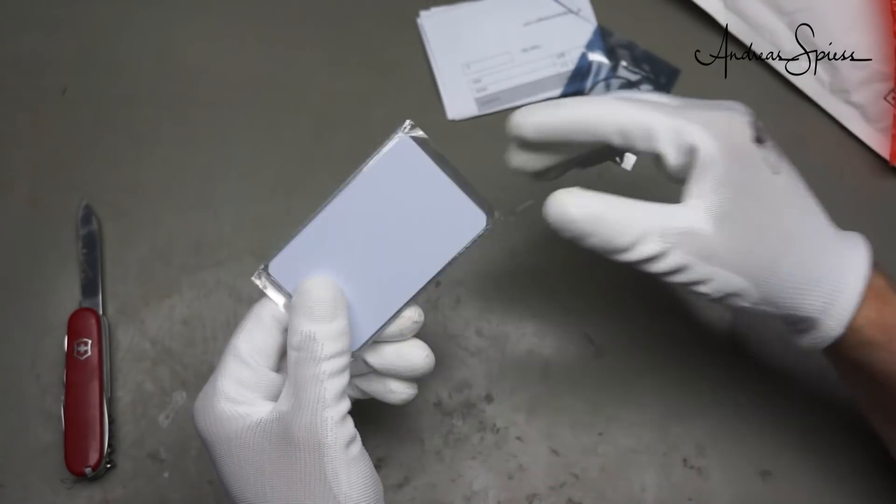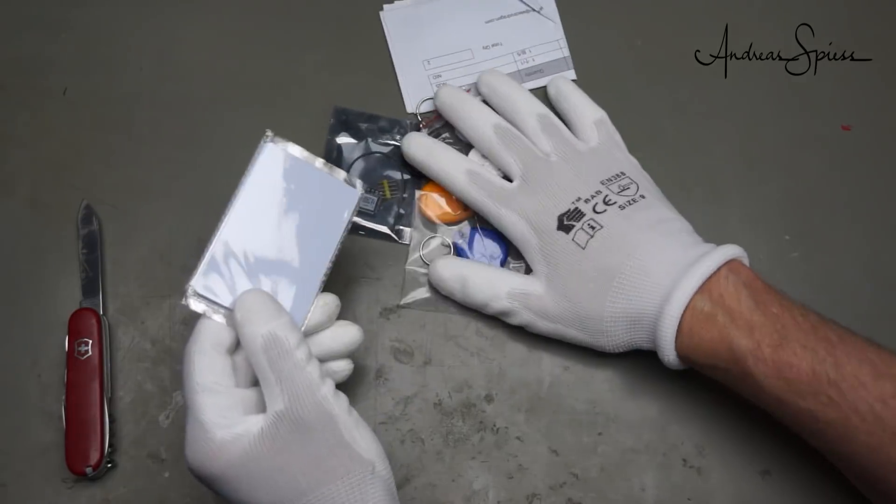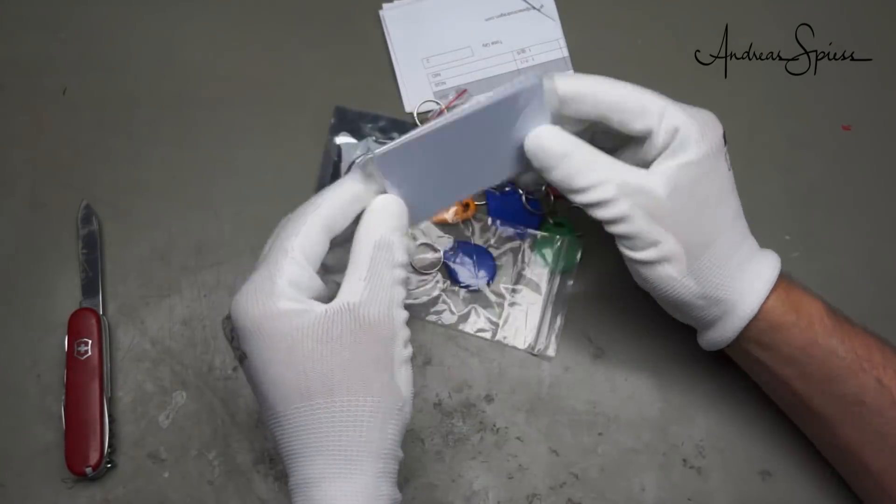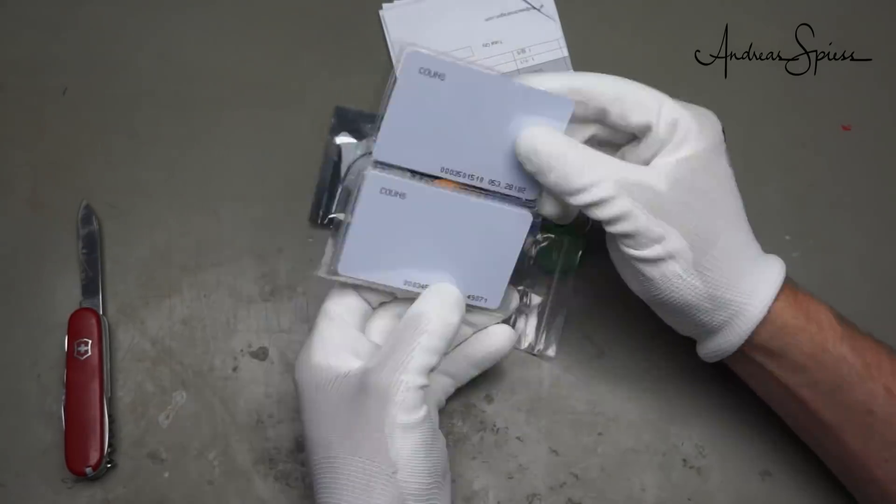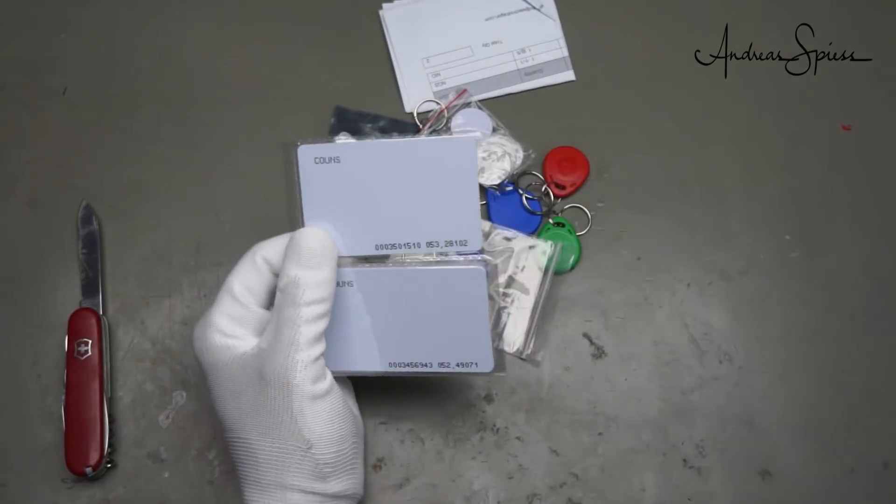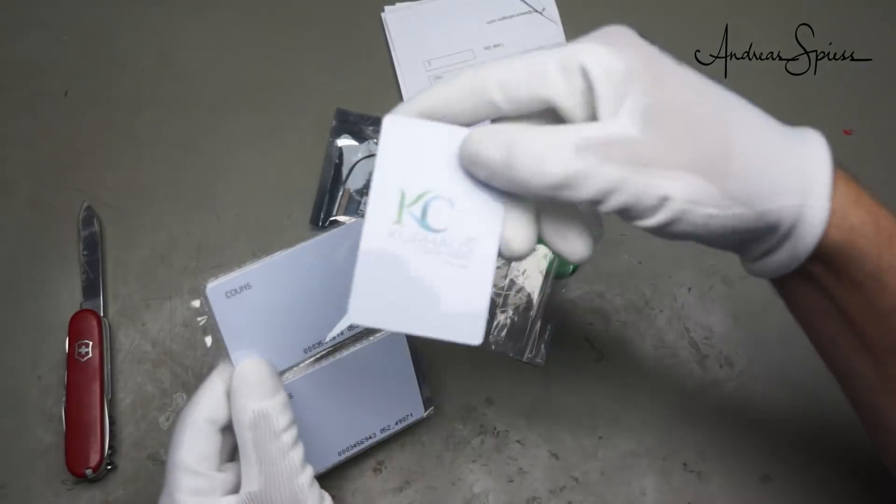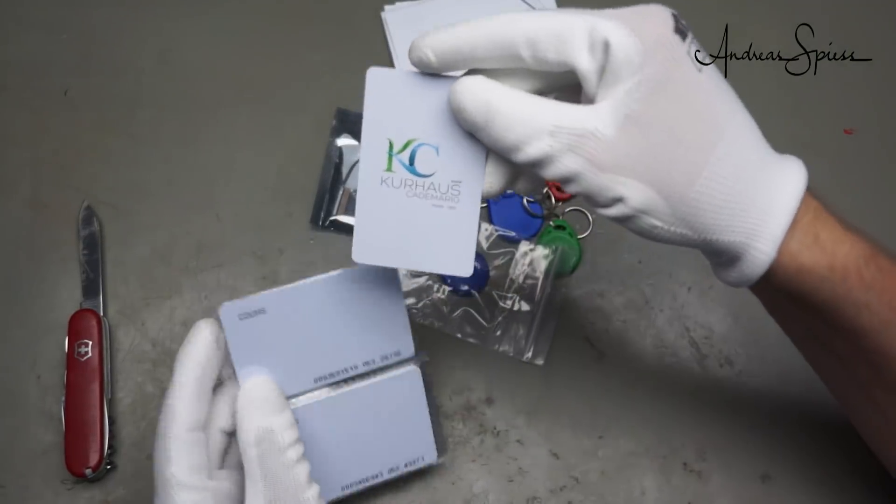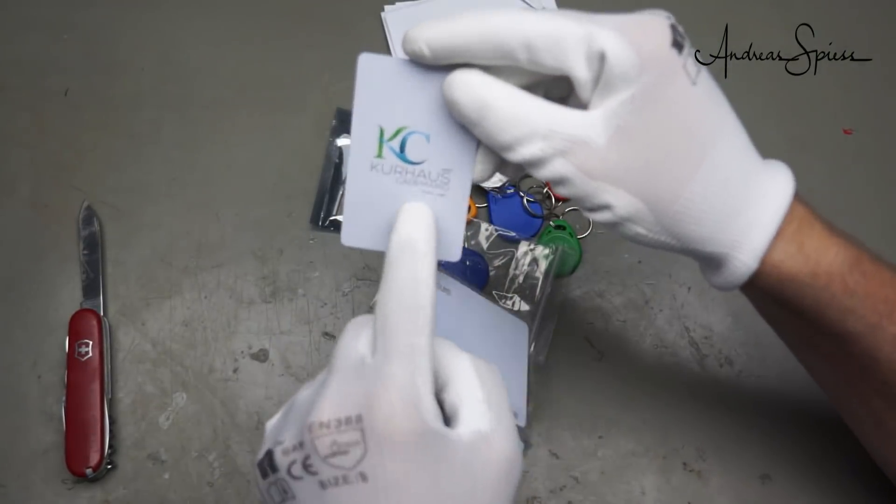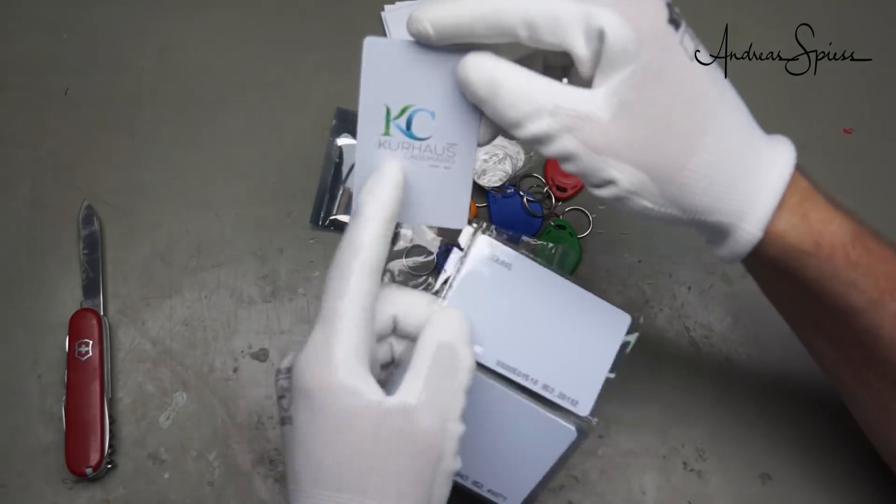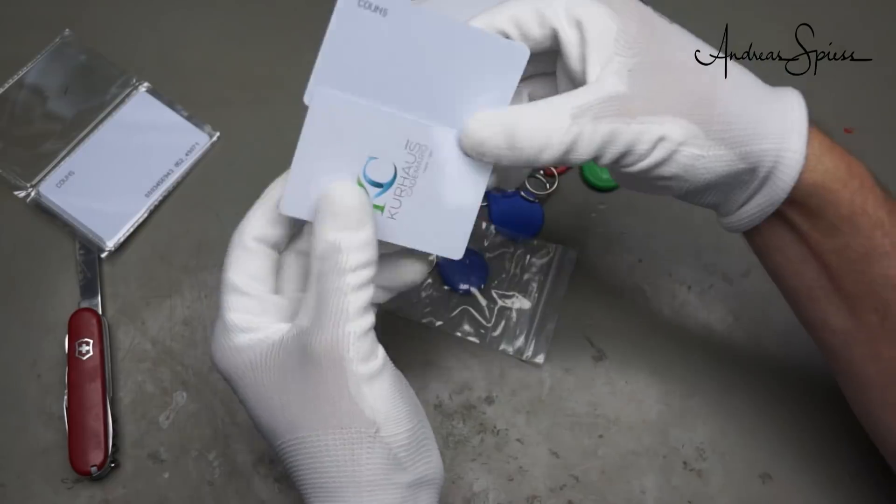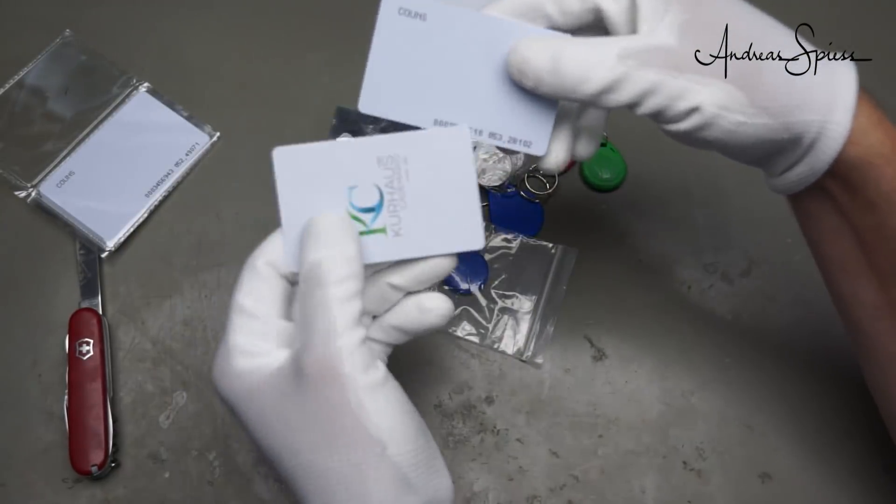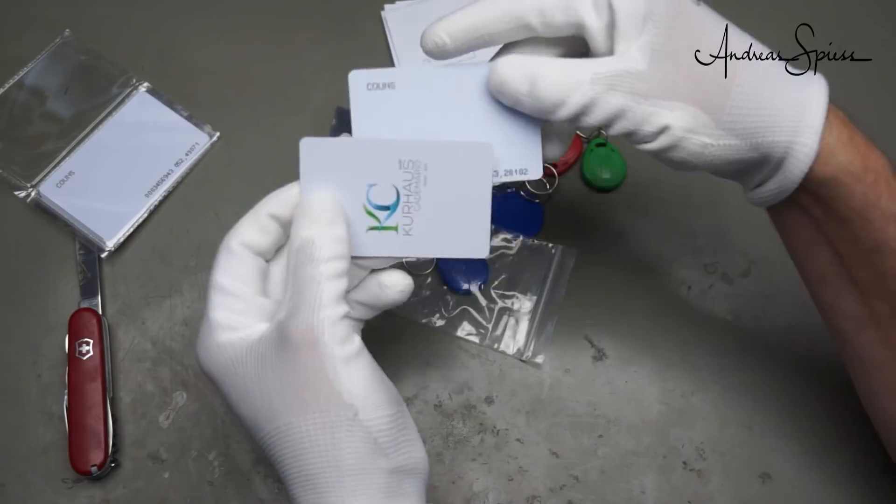And here we have something which is similar to these. These are credit card sized RFID tags. They are often used in hotels. For example, like this one. By the way, a very nice hotel in the southern part of Switzerland. This is the same size. And also this one has a RFID chip in it like this one.